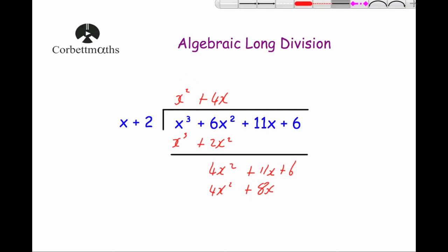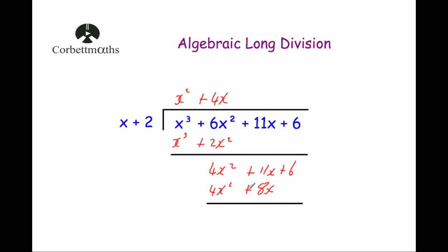You get to learn that the steps repeat themselves. We're going to subtract: 4x squared take away 4x squared is 0. 11x take away 8x is 3x. And 6 take away 0 is 6, so plus 6. Now we divide again — 3x divided by x is 3 — so we write plus 3 above.